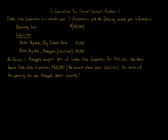S corporation tax, general concepts, problem one. Golden Glow Corporation is a calendar year S corporation with the following current year information: operating loss $120,000; liabilities: notes payable to Big Island Bank $30,000, notes payable to Pineapple, an individual, $20,000. On January 1st, Pineapple bought 60% of Golden Glow Corporation for $45,000, then loaned Golden Glow Corporation $20,000. How much of the operating loss may Pineapple deduct currently?